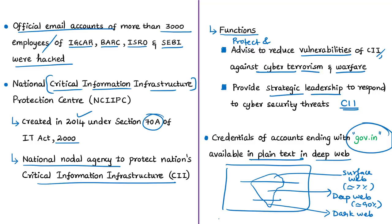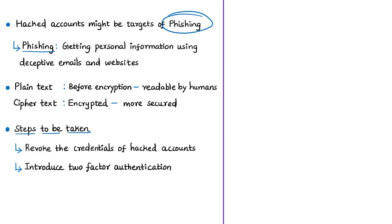The main targets were institutions such as Indira Gandhi Centre for Atomic Research, Bhabha Atomic Research Centre, and ISRO, with hundreds of accounts hacked. This demonstrates that even critical, sensitive, and strategic institutions dealing with atomic and space research are vulnerable to cyber attacks. The accounts may have been hacked through phishing — one of the oldest methods of cyber attack — where the hacker tries to gather personal information through emails and deceptive websites, tricking the target into sharing passwords or clicking malicious links.